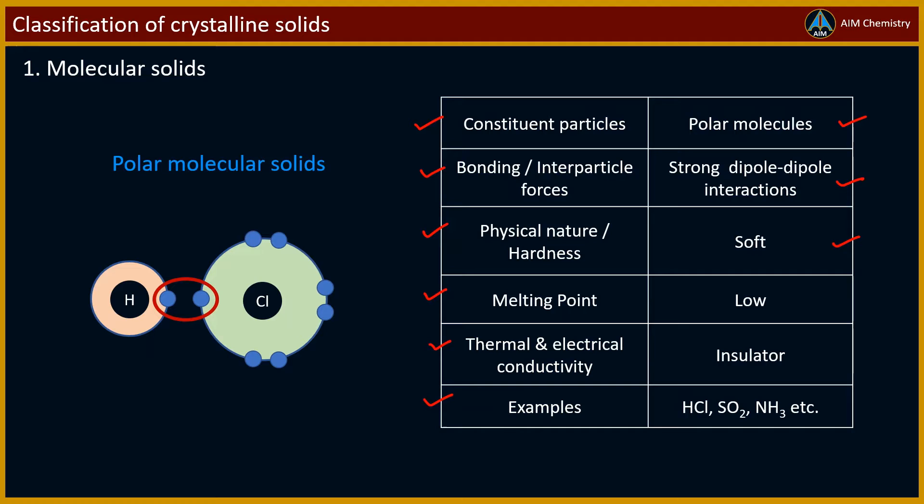That is, they have low melting point, but relatively higher than non-polar solids. They are non-conductors or insulators. Some examples of these solids are HCl, SO2, NH3, etc.